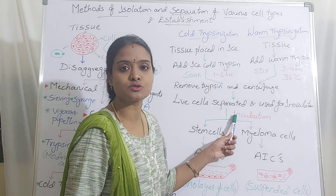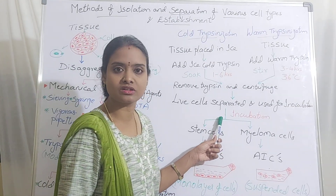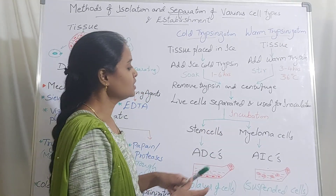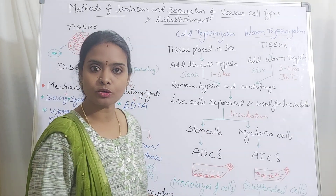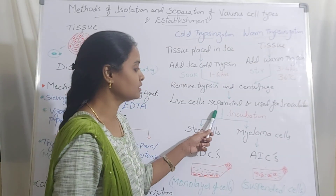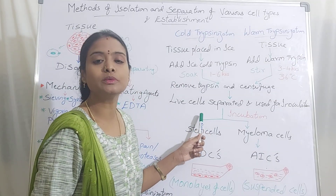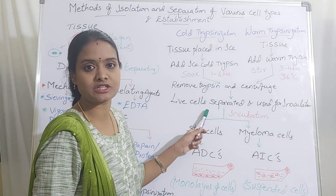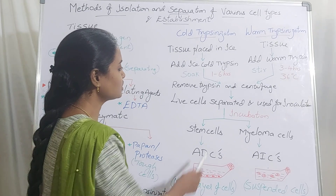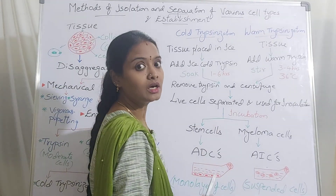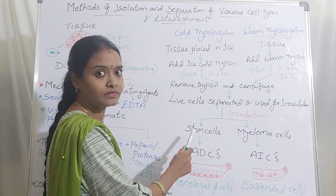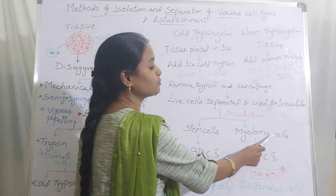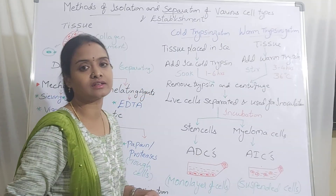Incubation must be at 37 degrees centigrade with pH 7.4. All the environmental conditions must be maintained with suitable animal tissue culture media — whatever cell you are taking, the suitable media must be selected. When you incubate, the cells divide and get differentiated as stem cells or myeloma cells based on their character.